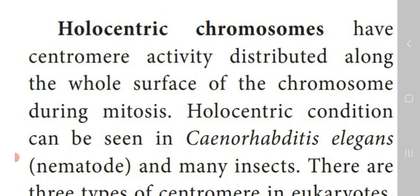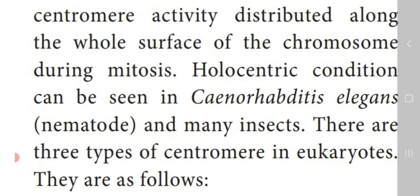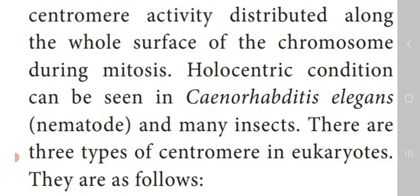Next we are going to see holocentric chromosomes. In a holocentric chromosome, the centromere activity is distributed over the entire surface of the chromosome during mitosis. These chromosomes are known as holocentric chromosomes. This holocentric condition is seen in nematodes and many insects. One example of a nematode is Caenorhabditis elegans.